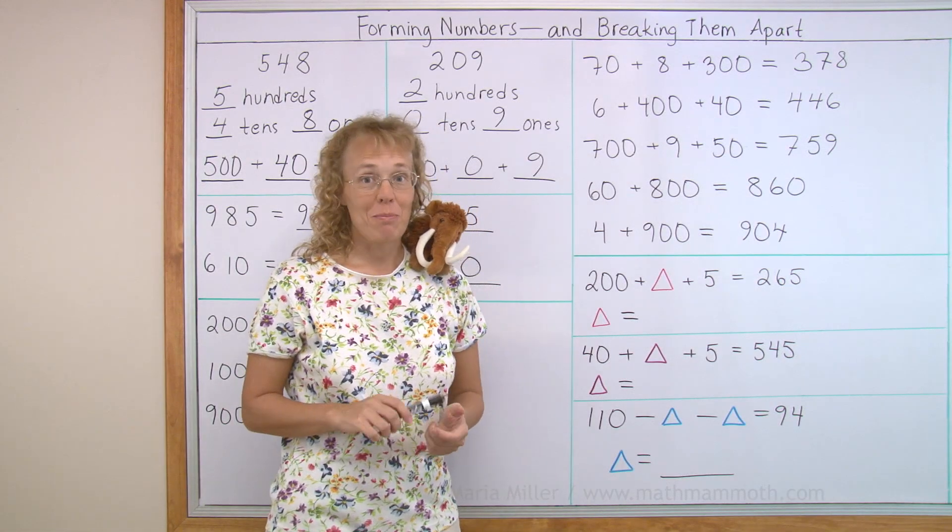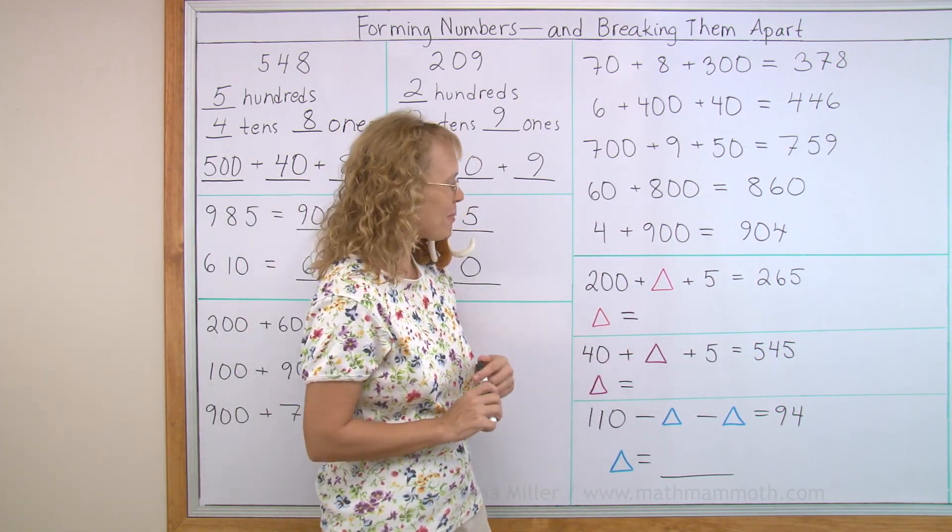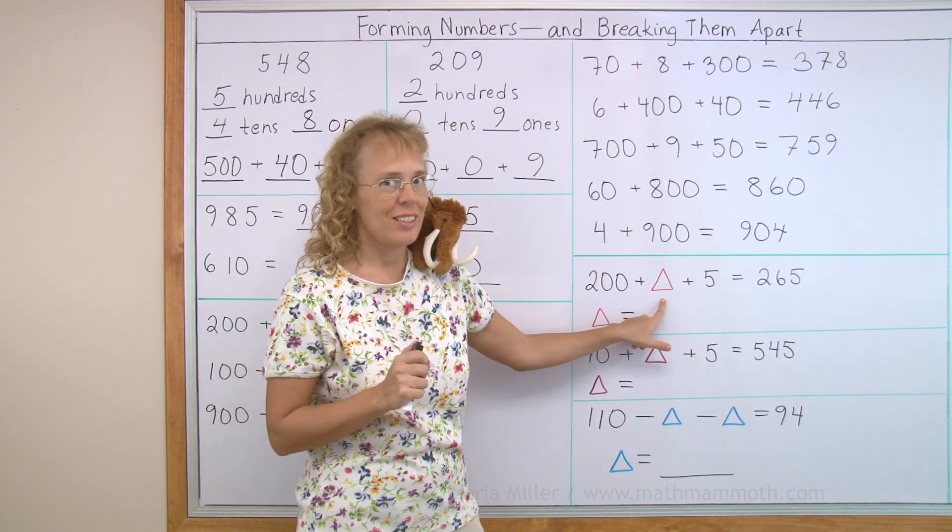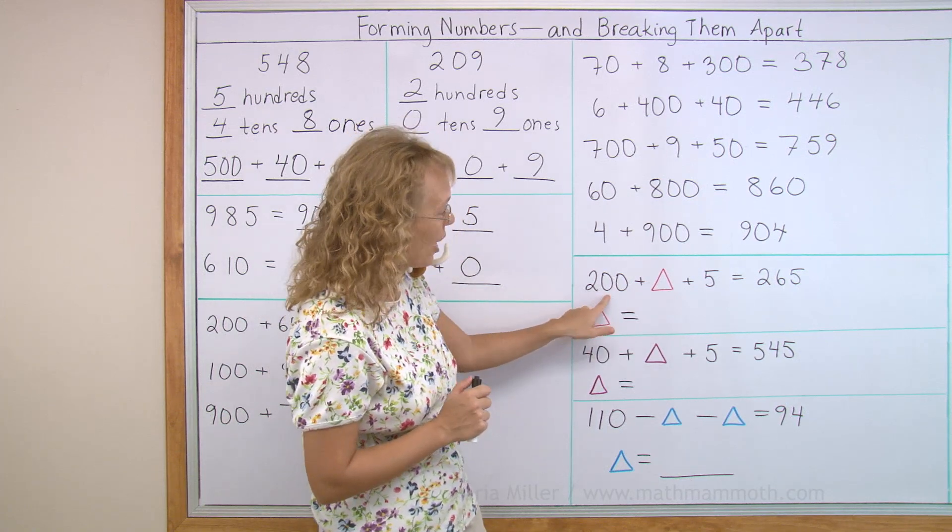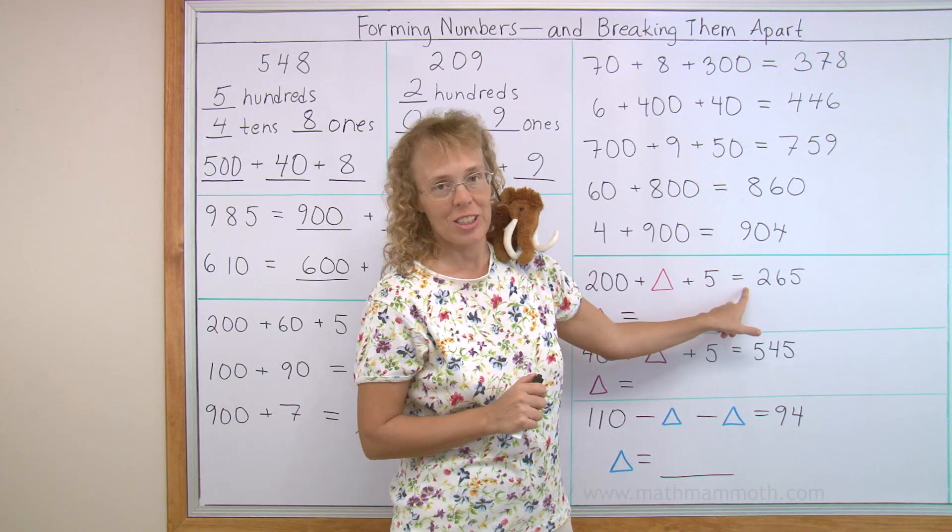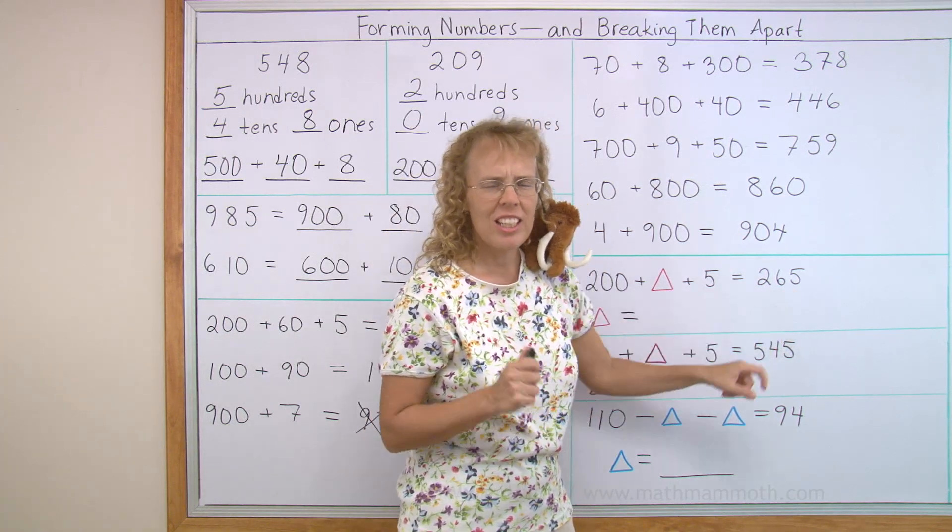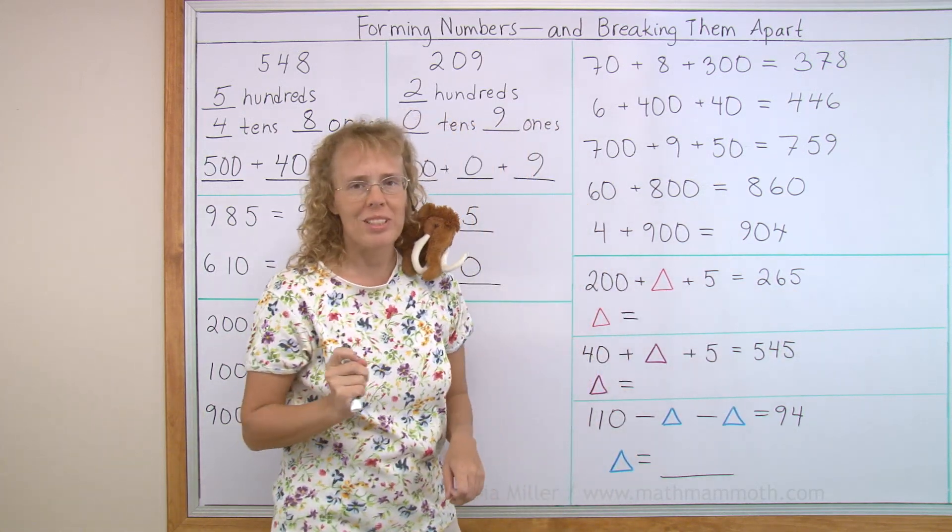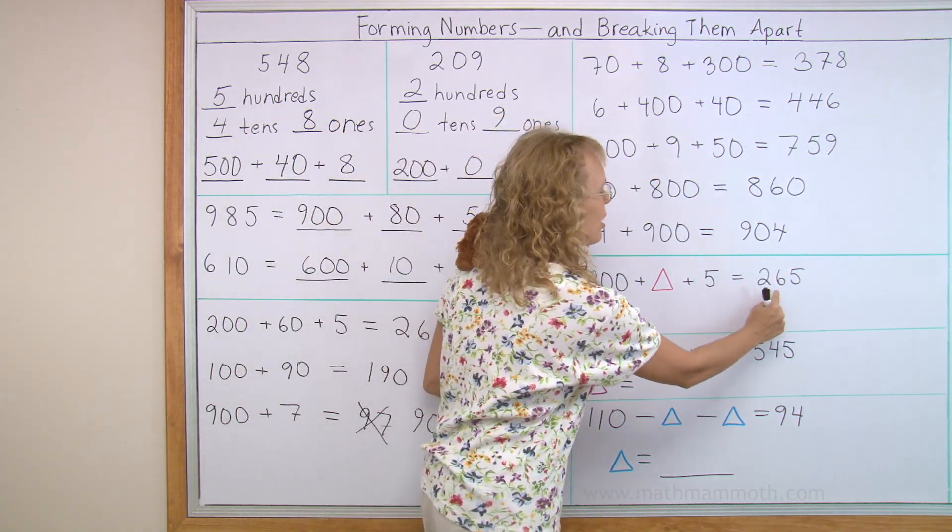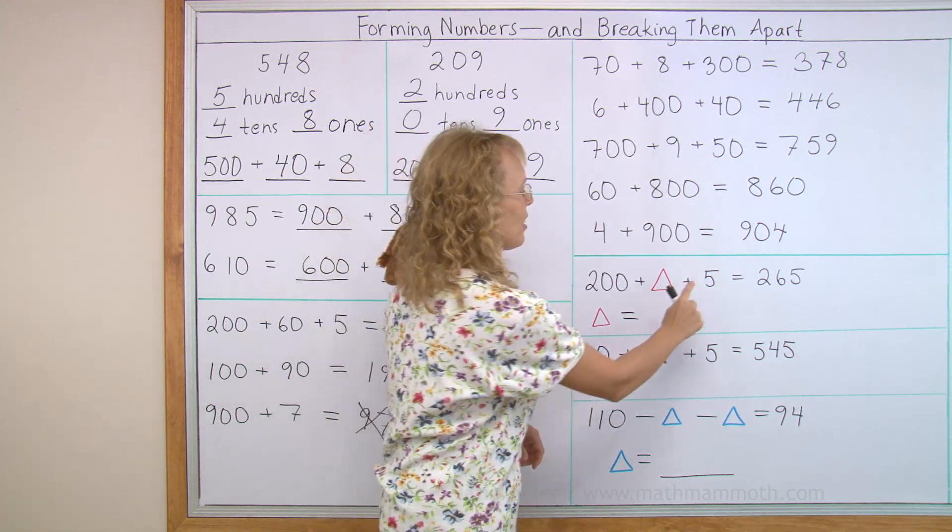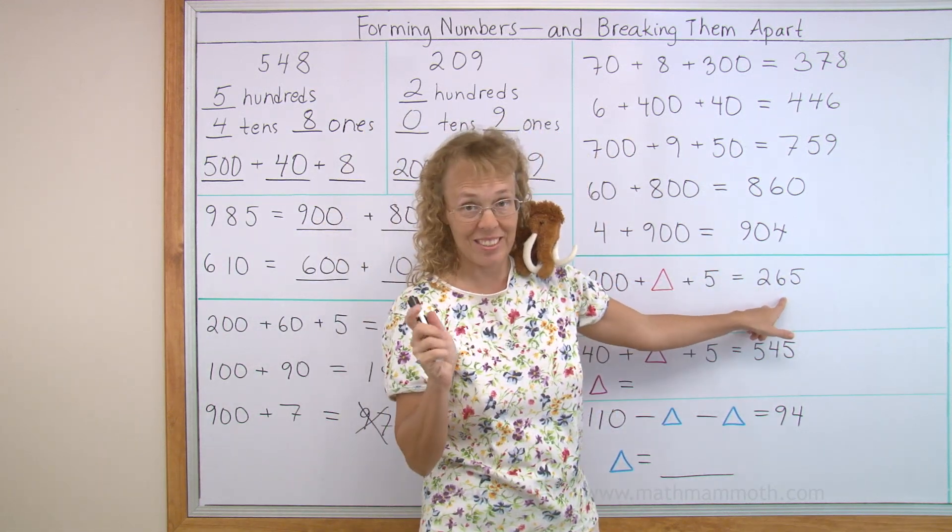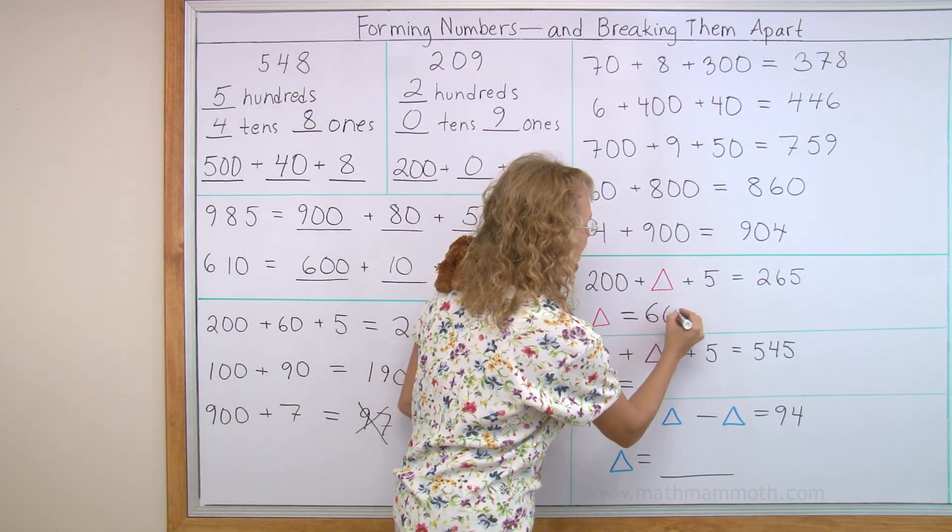Next, we're gonna do some puzzles with these triangles. And over here, we need to find what number goes in place of this triangle. So we have two hundred plus a triangle plus five equals two hundred sixty-five. Can you see what number goes here? It's pretty easy. Two hundred plus something plus five makes two hundred sixty-five. We can see five is there, two hundred is there. What's missing is the sixty, right? So the triangle equals sixty.